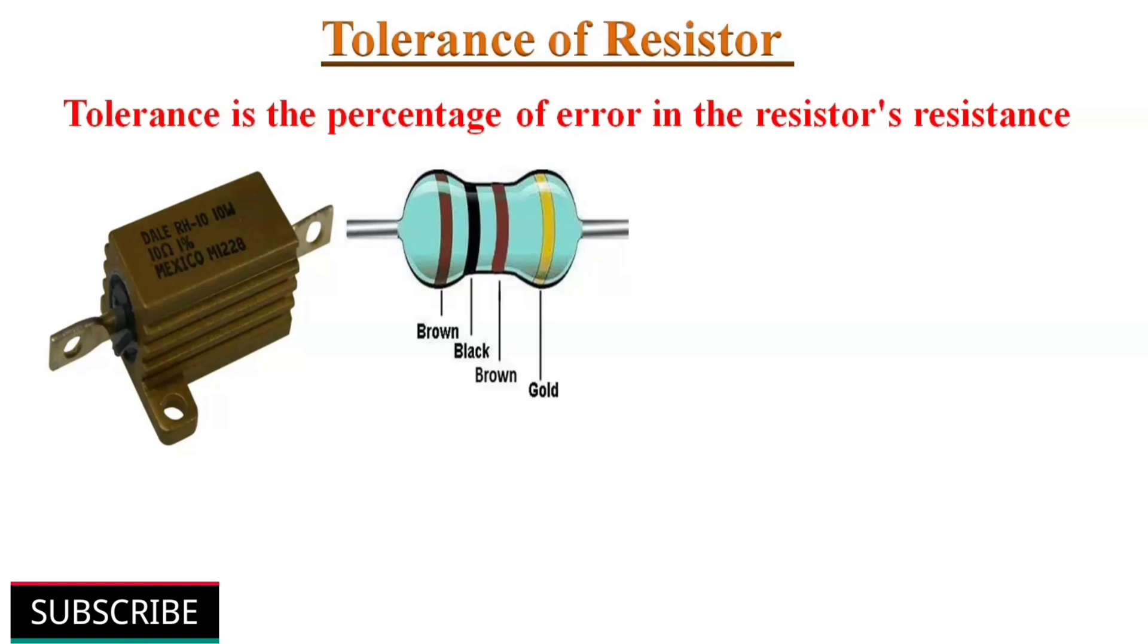Now second parameter is tolerance. It is the percentage of error in the resistor's resistance, or we can say how much more or less we can expect a resistor's actual measured resistance to be from its stated resistance. Tolerance is printed on resistor, or the fourth or fifth band defines the tolerance.